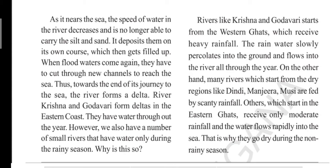Rivers starting from the Eastern Ghats receive only moderate rainfall, and water flows rapidly into the sea, which is why they dry up during the non-rainy season. When there is no rain rivers get drier; when there is heavy rain, streams join the river and it becomes large like the Krishna and Godavari. You should now understand the flow of rivers, how rivers form, perennial and peninsular rivers, tributaries, and deltas. Observe the map and complete the given homework.